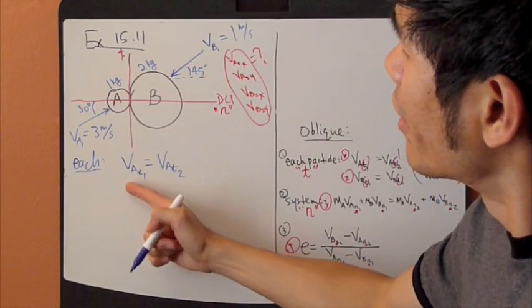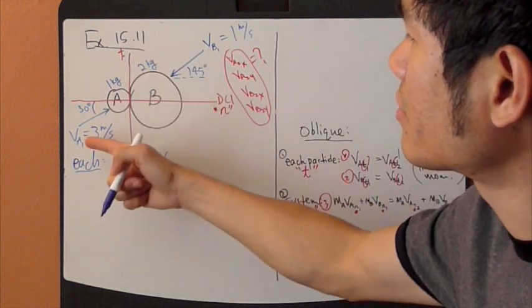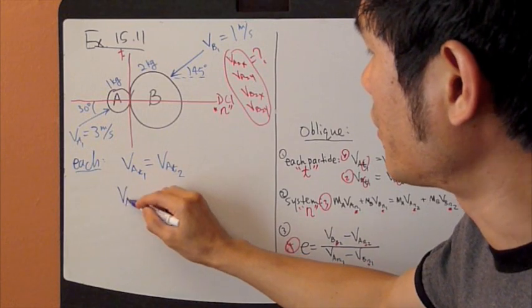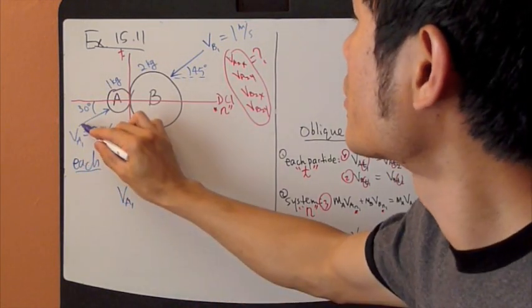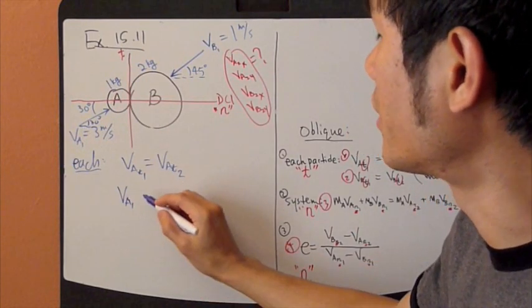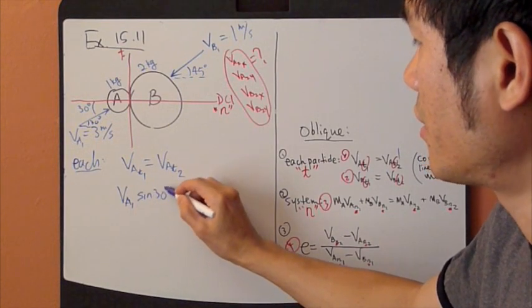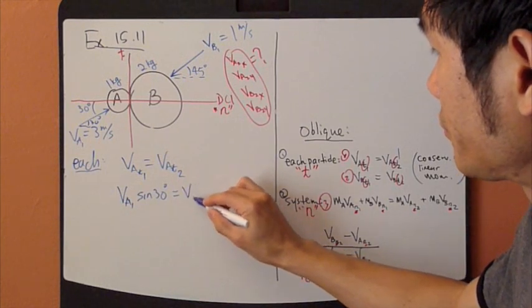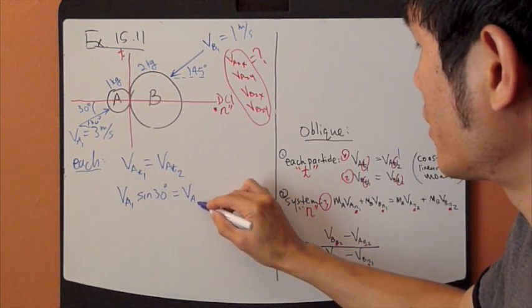So VAT1, which means the Y component. So VA1, if it's 30 degrees, then this is 30 degrees. So the Y component, the tangent component would be sine 30 degrees, equals VA tangent 2.